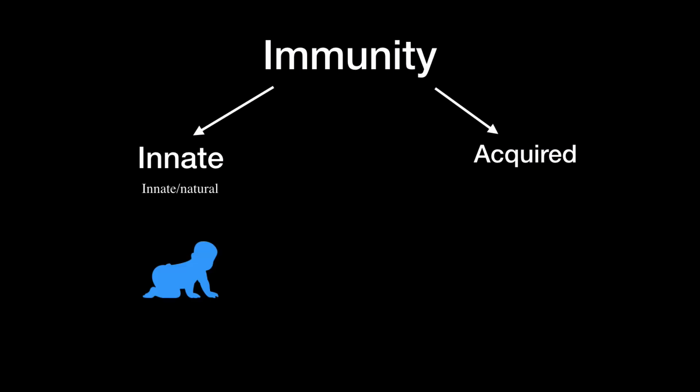The innate immune system is mainly present since birth and is therefore sometimes also called the natural immune system. While the acquired, however, forms during a person's lifetime and is therefore sometimes also called the adaptive. Just remember that the baby also has some type of acquired immune system. I just put the baby there to show you that you've always had the innate immune system ever since you were born.